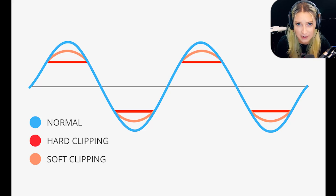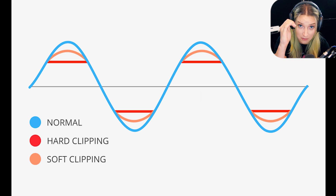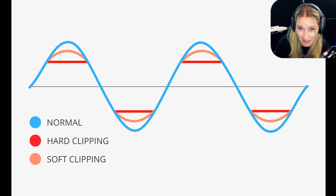That introduces distortion. In digital systems we have a pretty hard cutoff point, so the signal gets clipped, cut off, and flattened out in a pretty extreme, hard way — so we call that hard clipping. When we go into the analog realm and talk about tube equipment, that cutoff happens in a much more rounded way. With digital it's like a flat cutoff, but with analog gear it happens in a more rounded, forgiving way.